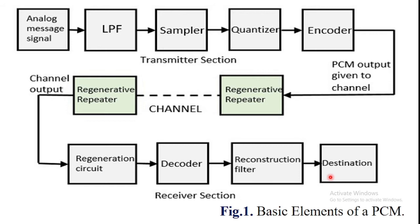Next we are going to discuss each individual block: the low-pass filter, the sampler, the quantizer, the encoder, the regenerative repeater circuit, the decoder, the reconstruction filter, and the destination.